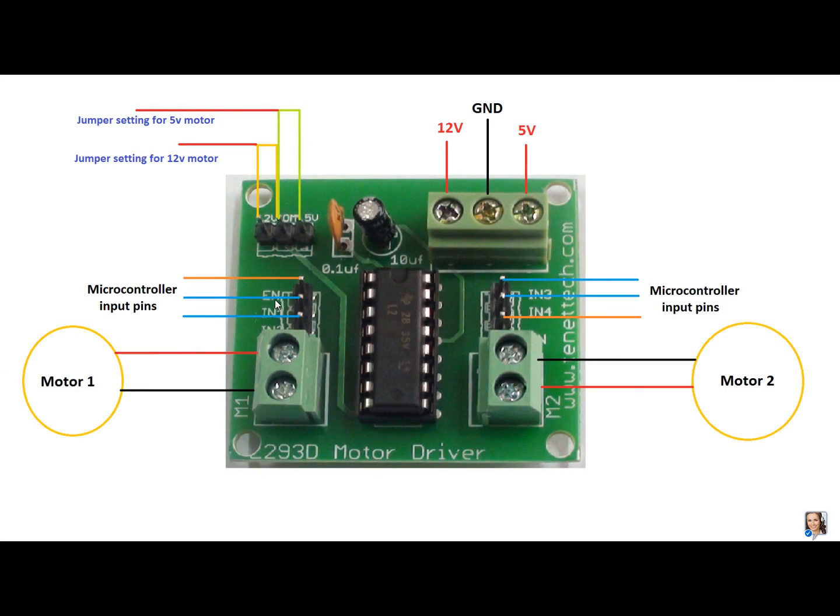Now I will be giving you the physical description of the motor driver breakout circuit. Here we can see a jumper with 3 pins: a 12 volt supply, a common, and a 5 volt. This is used when we want to supply 12 volts—we provide a jumper between the 12 volt and the common. And if we want to give 5 volts, we provide a jumper between the common and the 5 volt.